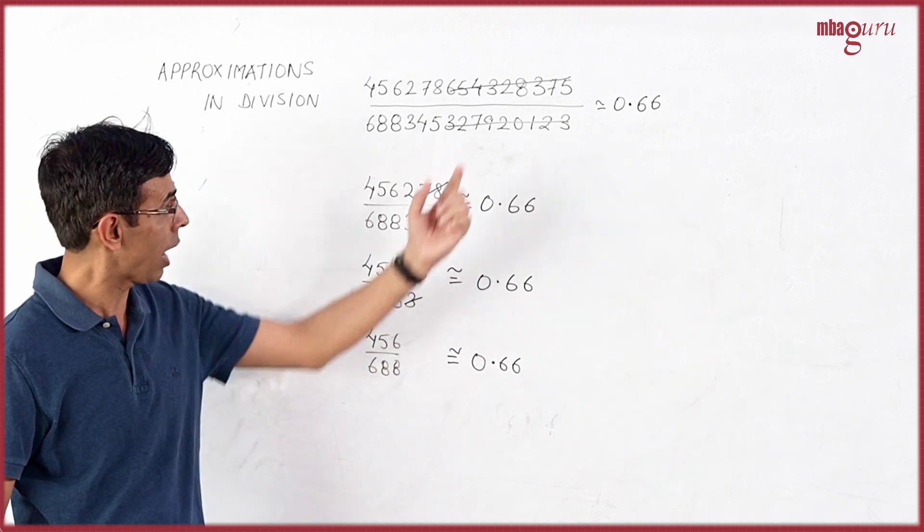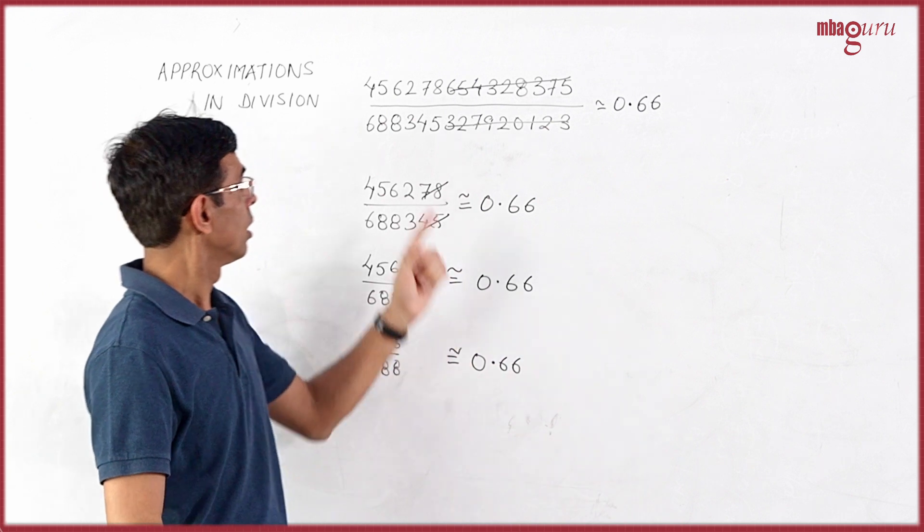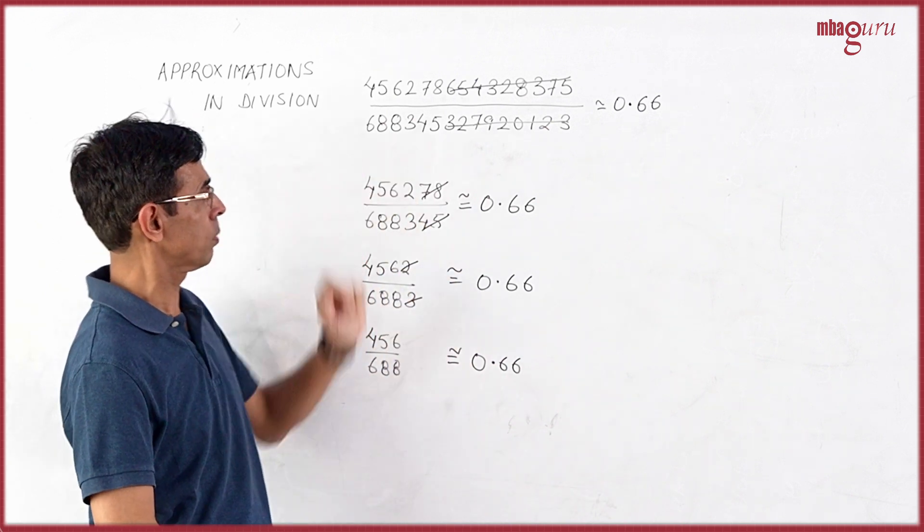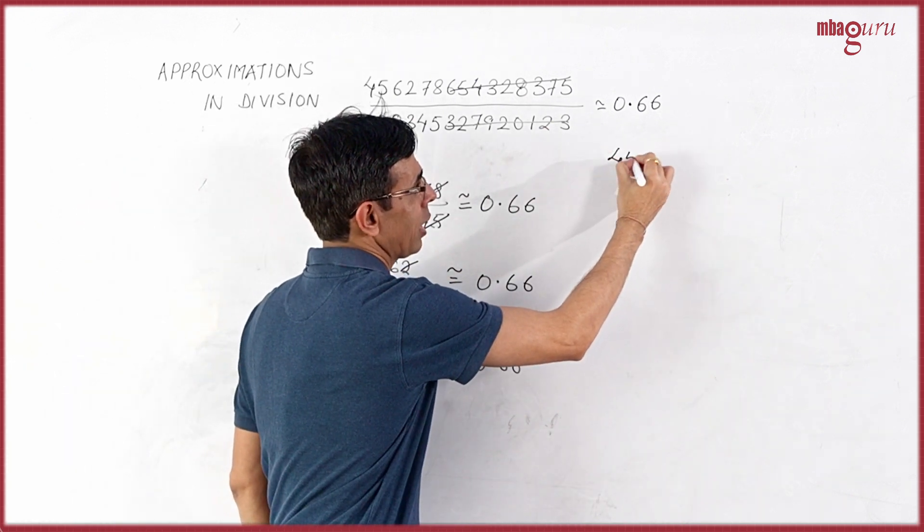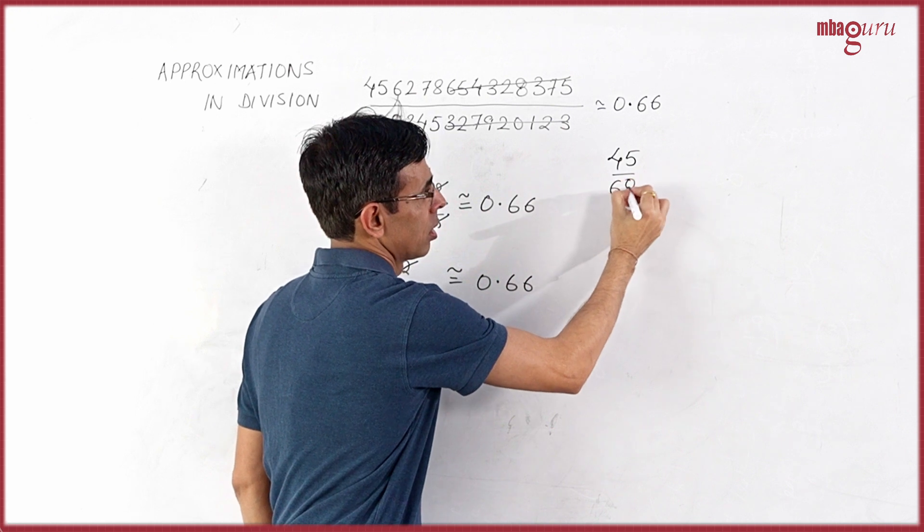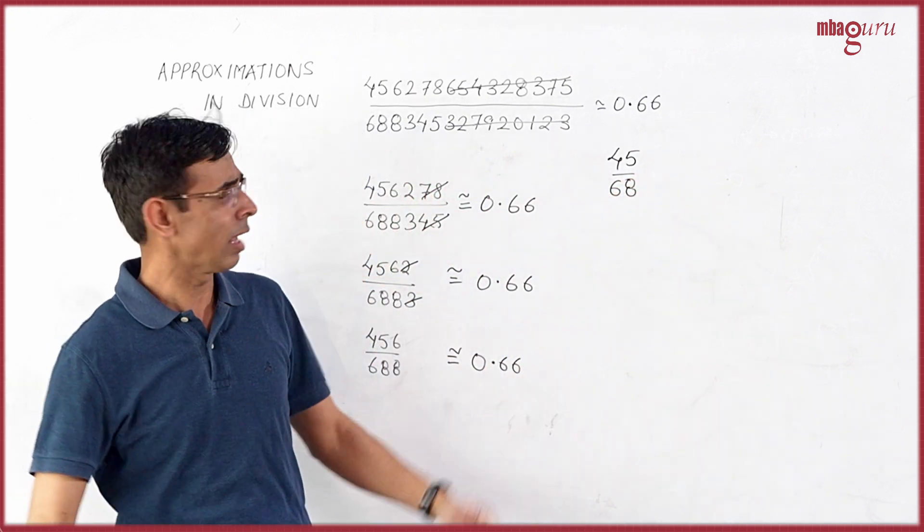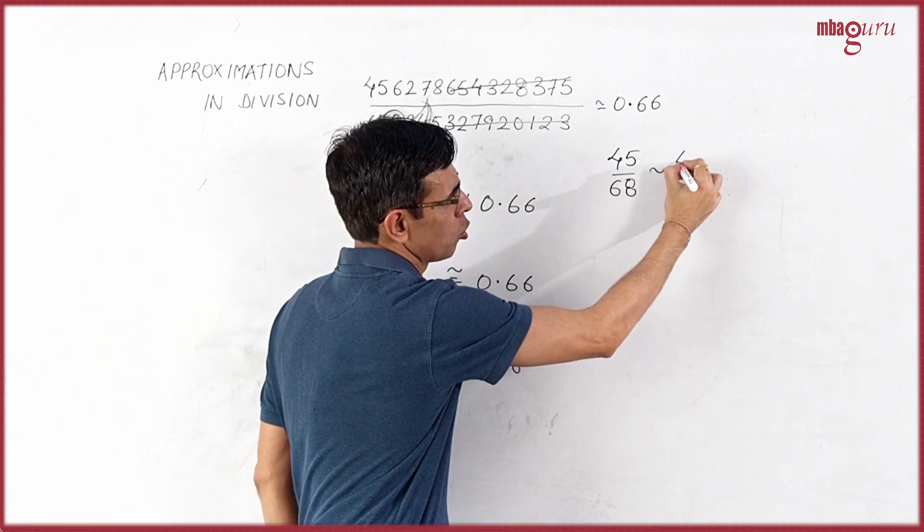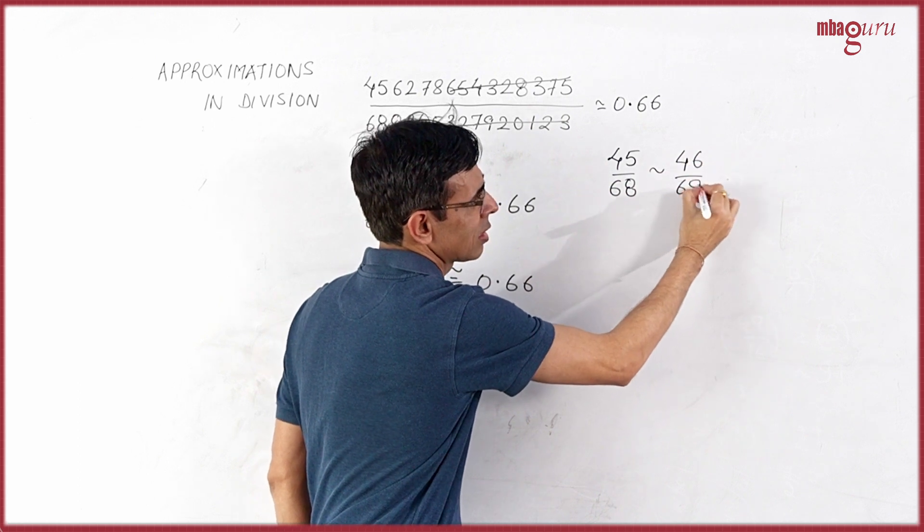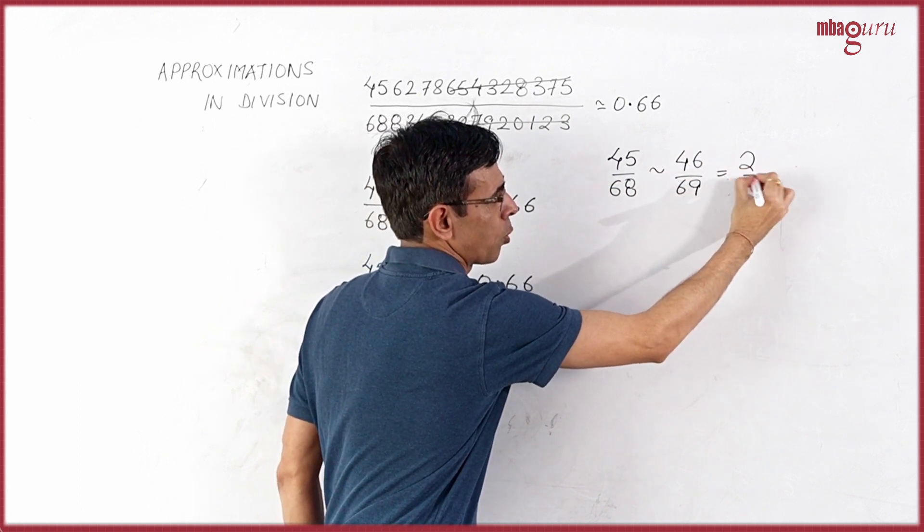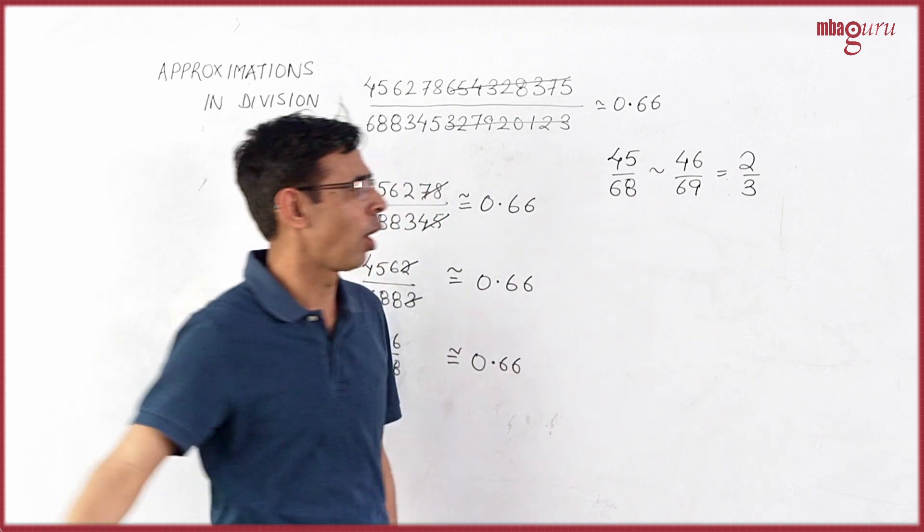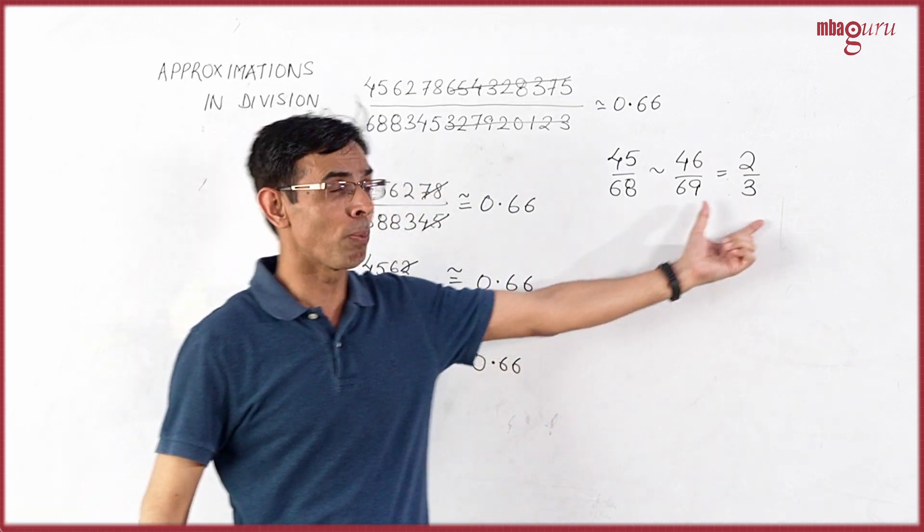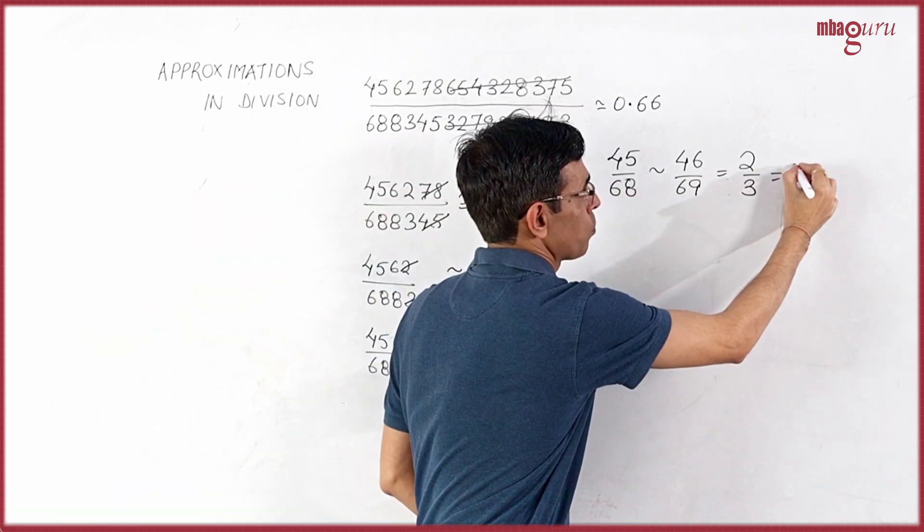In fact, how I actually calculated it is simply by looking at this expression, which has been very close to this expression. I thought this should be pretty close to this, which is nothing but 23 into 2 upon 23 into 3. So 2 by 3, which is 0.66.